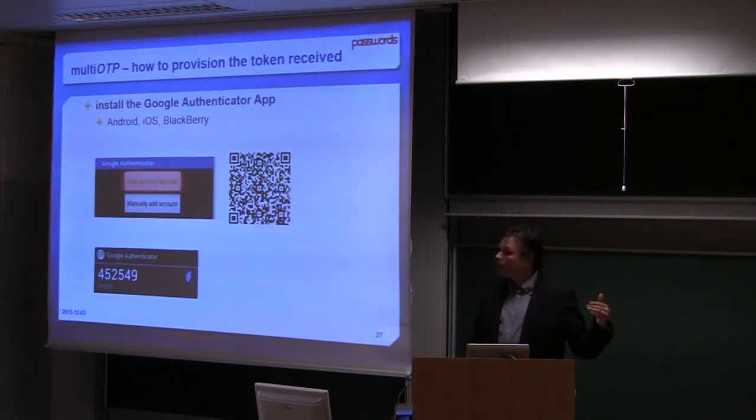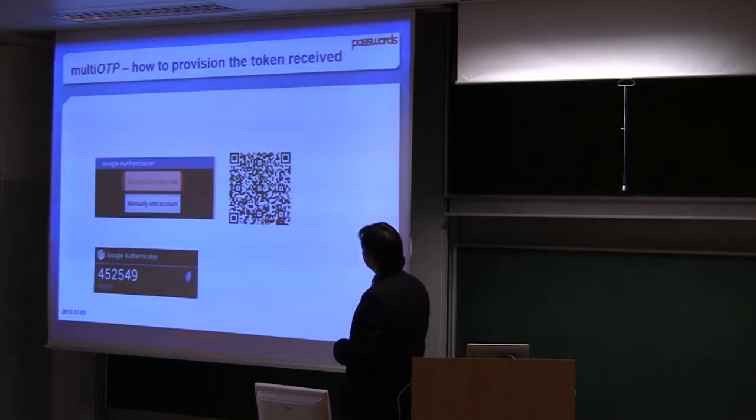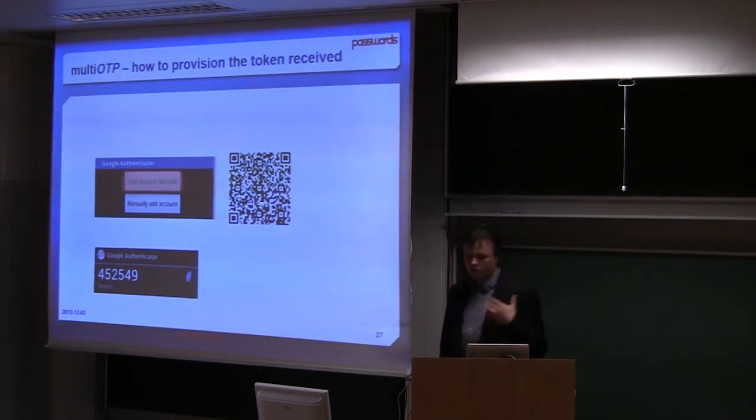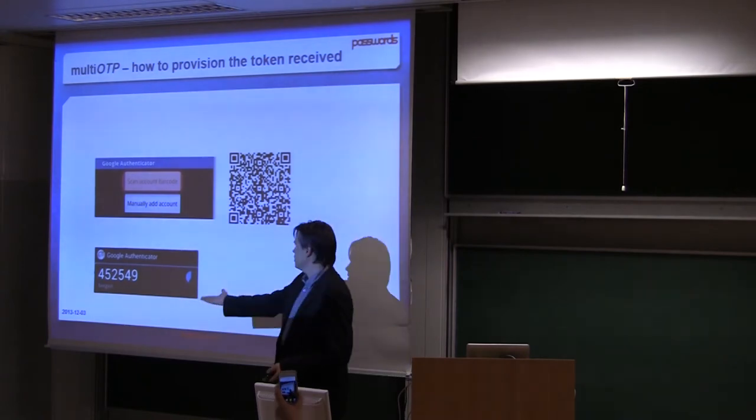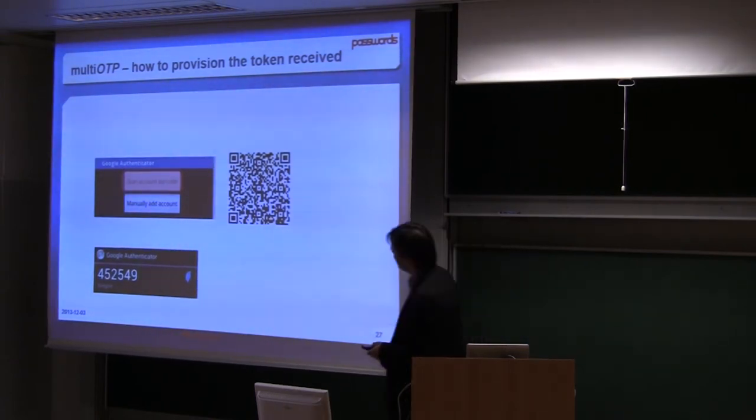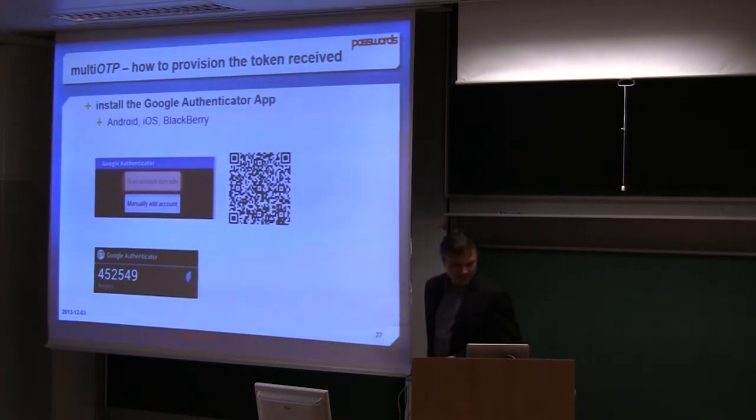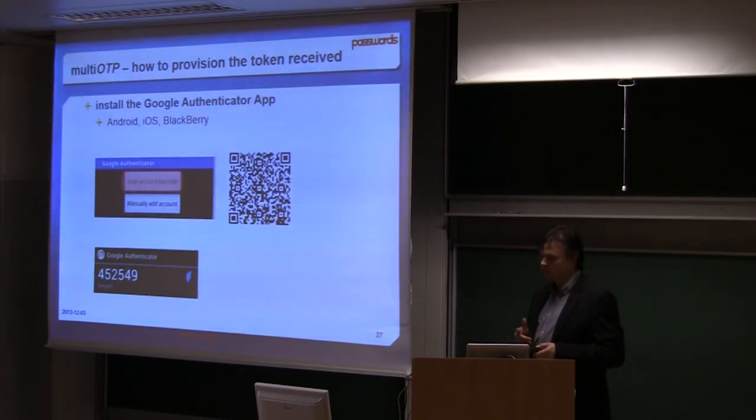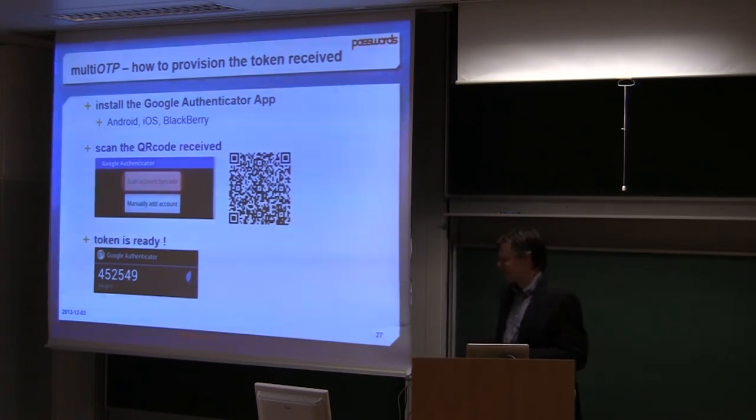On the other side, how to provision the token is very simple. First you install Google Authenticator if you don't have it, and you scan the QR code and that's it. You have your new user and token. You can install it on Android, iOS, BlackBerry. If you have other authentication solutions, perhaps it's not possible to flash the QR code, so you need to take the parameters which is provided also. Token is ready and it works.